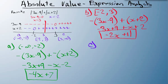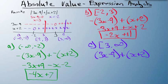Lastly, section C from 3 to infinity. Both expressions are positive here, so I can write it as 3x minus 9 plus x plus 2. I don't need to flip any signs. Collecting like terms gives 4x minus 7.